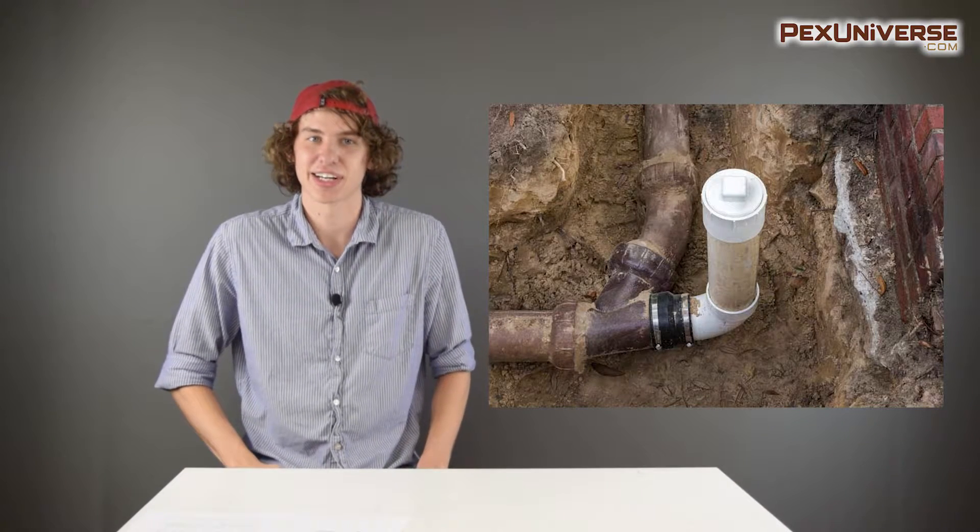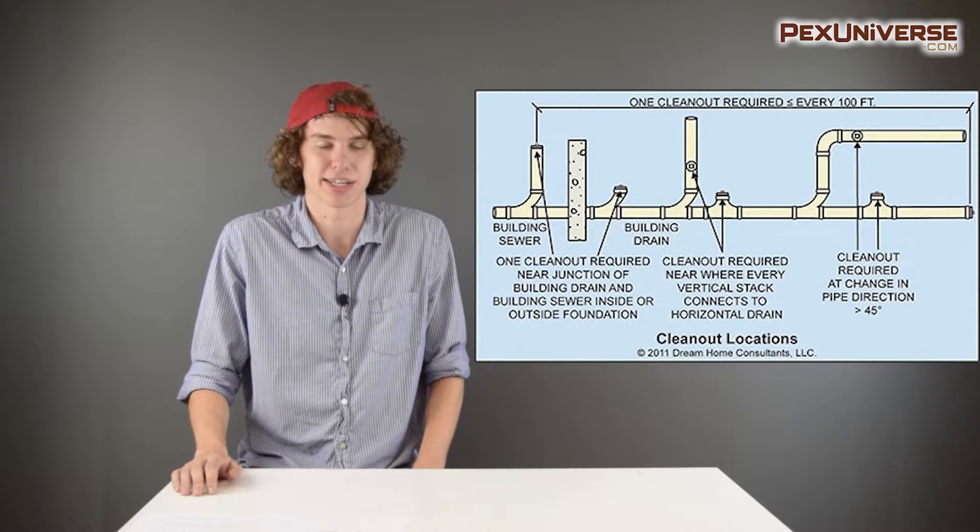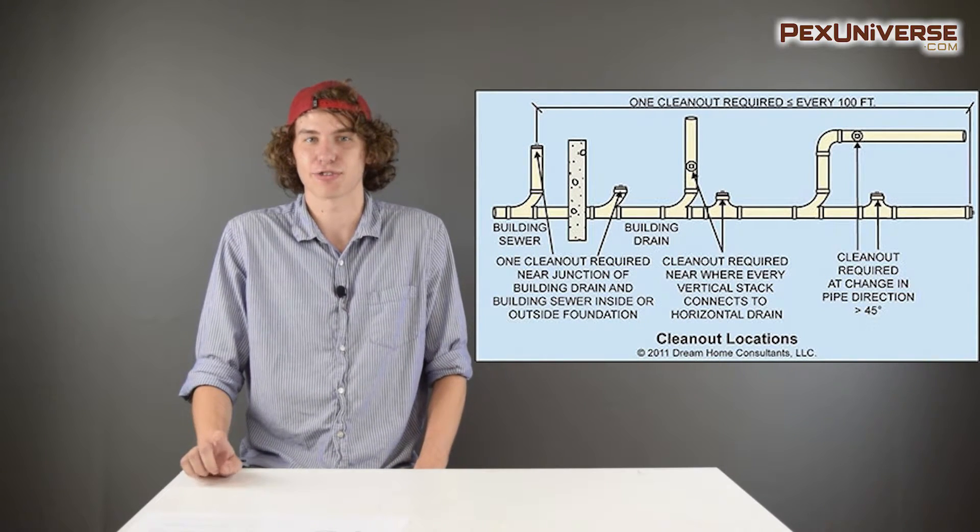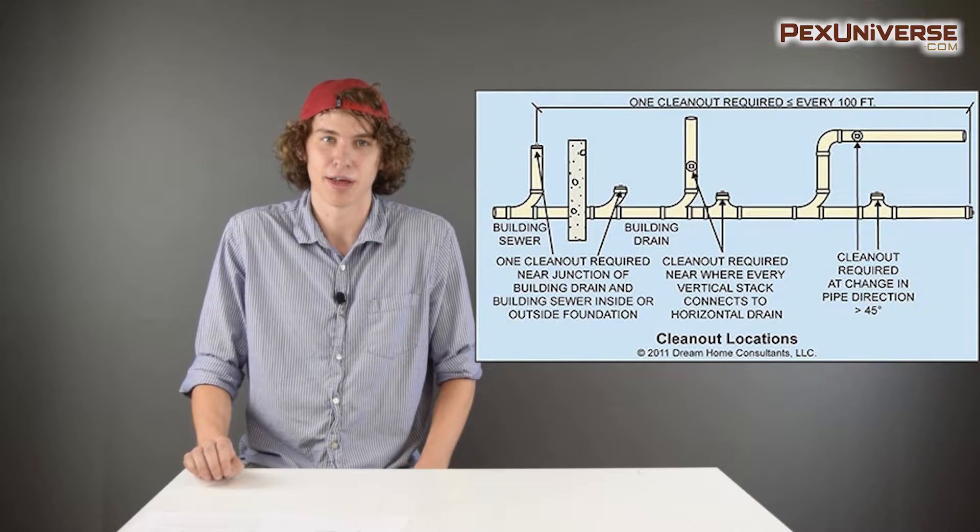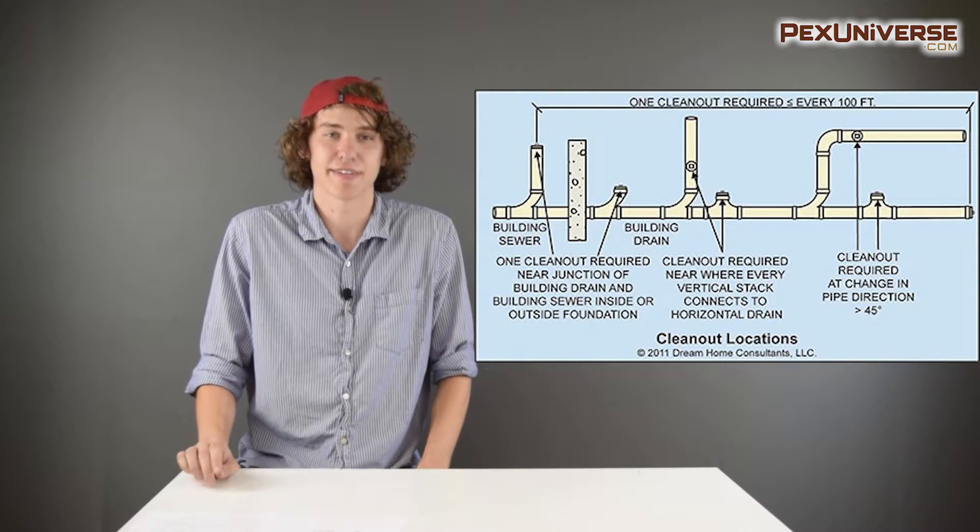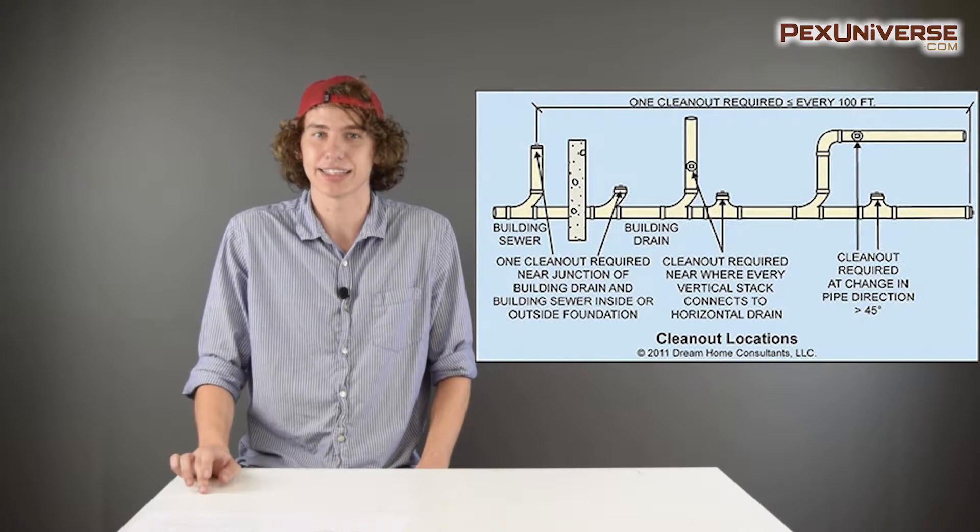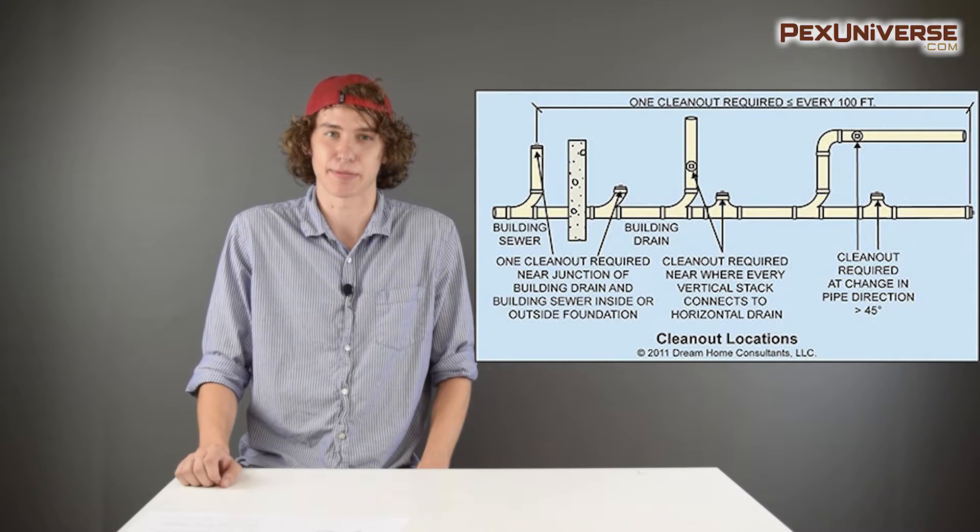First off, cleanouts. If you haven't heard of them, you're definitely doing something wrong. Cleanouts provide access to your drainage pipes in case of blockages. Every drainage pipe must have a cleanout installed minimum of every hundred feet, and every cleanout must have a clearance of about 18 to 32 inches depending on the size of the pipe. There are a lot more specifics about cleanouts, and again you can find all those in your state's specific code.